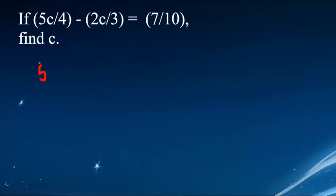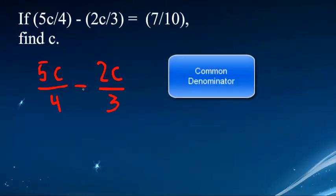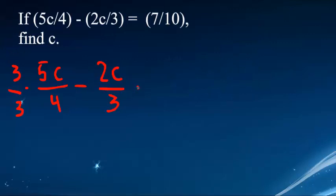So you need to write down the problem: 5c divided by 4 minus 2c divided by 3. I'm already going to write the left-hand side because that's the only one we'll be working with right now. To combine these terms, you need to find a common denominator. To do that, you want to multiply the left term by 3 over 3 and the right term by 4 over 4.